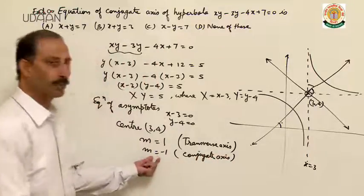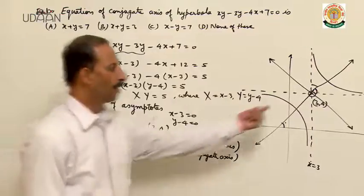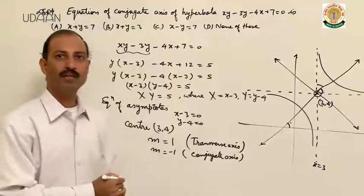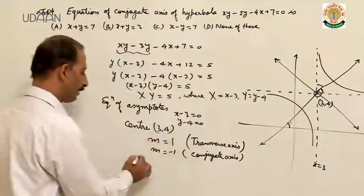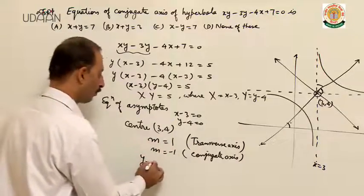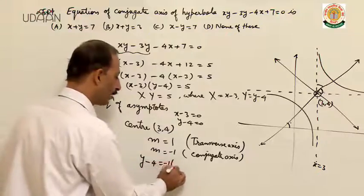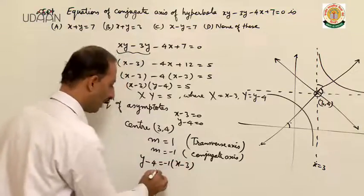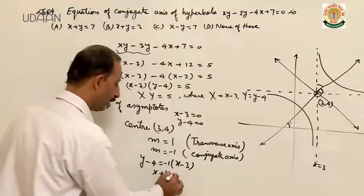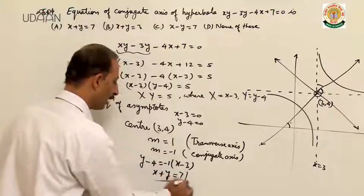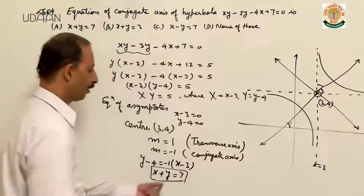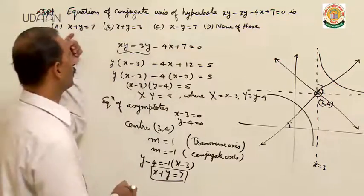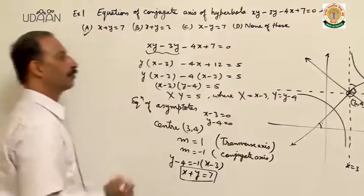Slope of conjugate axis you know, point you know. With the help of point-slope form, we can find the equation of conjugate axis. So y minus 4 equal to minus 1 into x minus 3. So x plus y equals 3 plus 4, which is 7. That is the equation of conjugate axis. So you can check your option — A is the correct option.